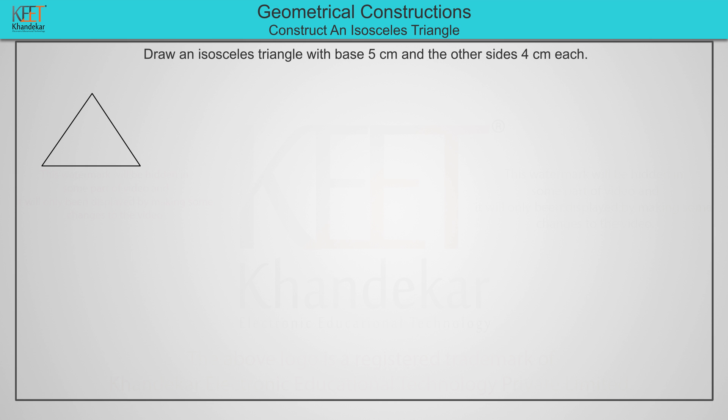A rough figure is on the screen. The marking indicates that a base and other two sides are given. Name the vertices as A, B, C respectively.